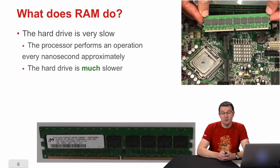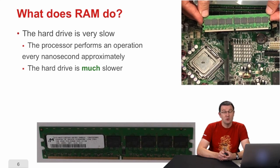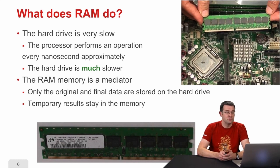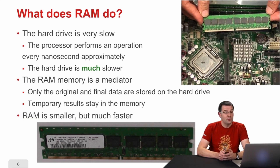If data transfers happen between the processor and the hard drive, what is the memory for? The computer's memory is located between the processor and the hard drive. That's because the hard drive is very slow. The processor performs billions of operations per second, but the hard drive can't keep up the pace. So the memory — the RAM, random access memory — will act as a mediator. Data is loaded in the memory, the processor uses it to perform operations, and when it's done, the result is sent back to the hard drive if data needs to be saved.